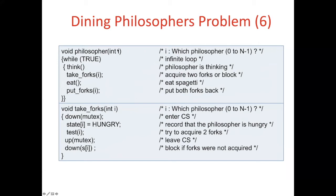Here is the code for the philosopher function. Integer I is the parameter, showing which philosopher it is, from 0 to N minus 1. In an infinite loop: think — philosopher is thinking — then take_forks(I) to acquire two forks or block, then eat — eat spaghetti, critical section — then put_forks(I) to put both forks back. I is the parameter throughout.